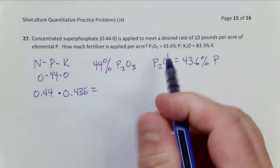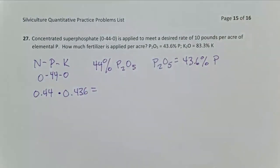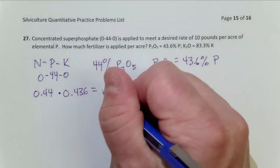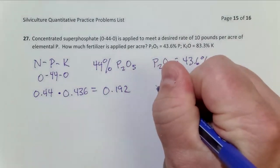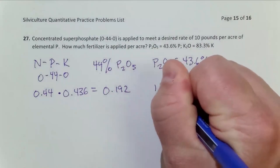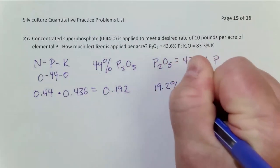We're removing the oxygen from that P2O5 that we don't want to account for. That equals 0.192, which means that our actual fertilizer here, this concentrated superphosphate, is 19.2 percent elemental P.